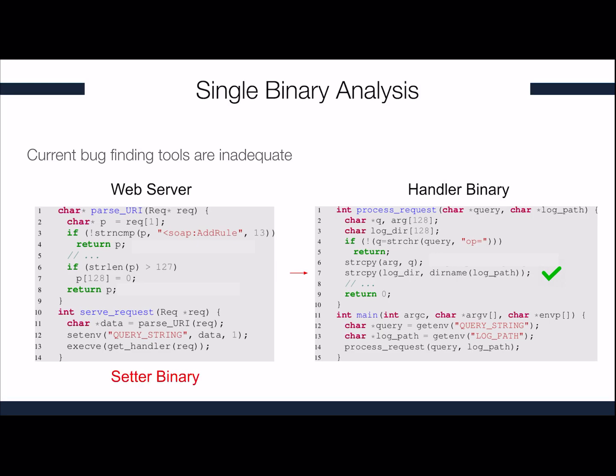We refer to the first type of binaries as setter binaries — those that prepare some data for other binaries to use — while the second type will be called getter binaries. Though in this example we only had possibly one false positive, we can easily imagine how on a large firmware these false positives might rise.